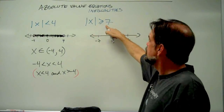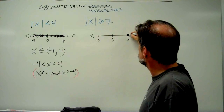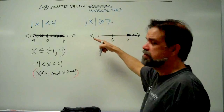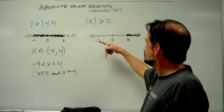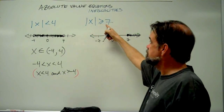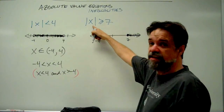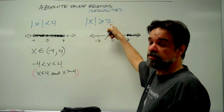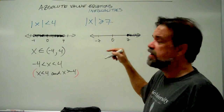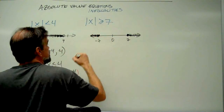The absolute values of 1 through 6 are not greater than or equal to 7. So really, the smallest number included is 7, and then anything bigger than 7. But we've also got stuff on the negative side: the absolute value of negative 7 is 7, which is greater than or equal to 7. The absolute value of negative 8 is 8, which is greater than 7 — so that's in our solution set. We have 7 and everything to the right, and also negative 7 and everything to the left.